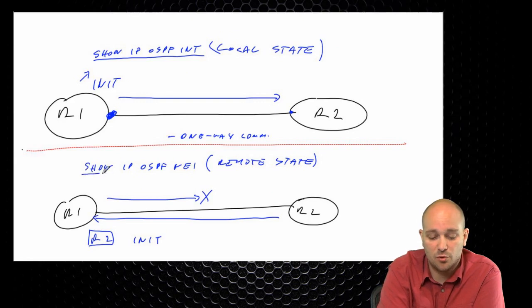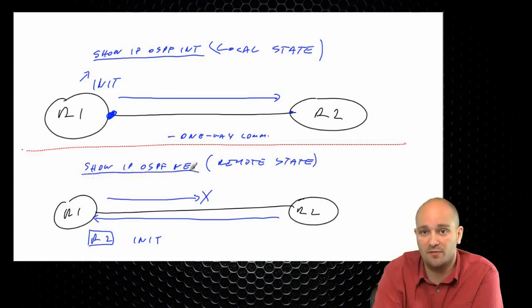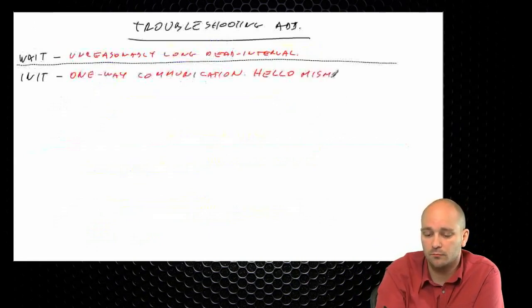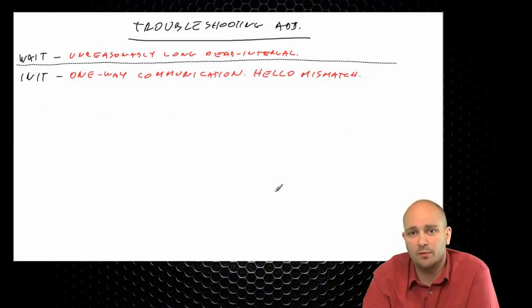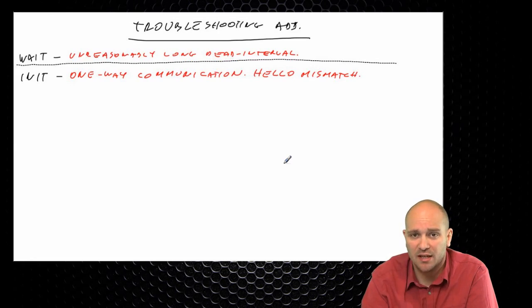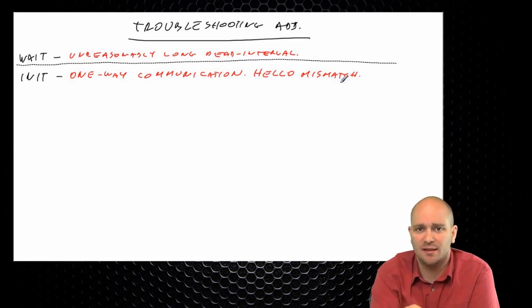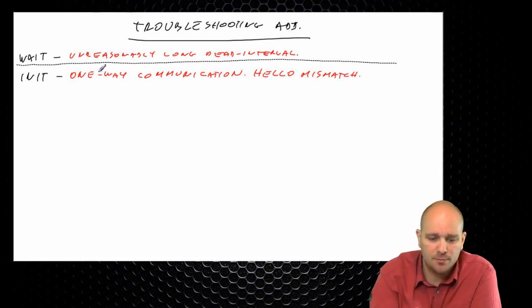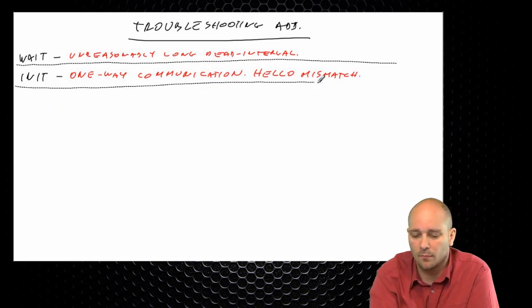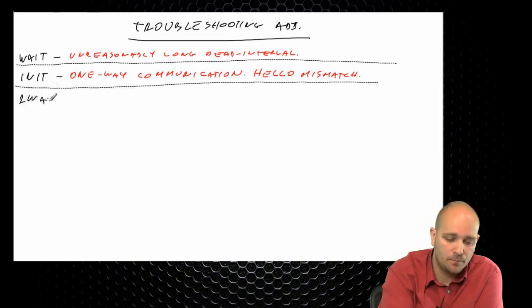For the init state, being stuck there for a long time usually means one-way communication. If R1 is sending hellos but not receiving any, that interface is in init. One-way communication means we're sending packets but the other side isn't sending back. This could be because OSPF is not enabled on the other router, a layer 2 problem, an access list, policing, or any number of reasons.